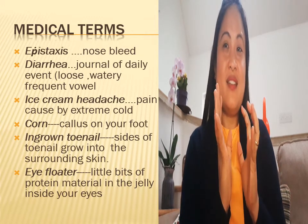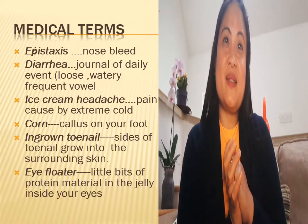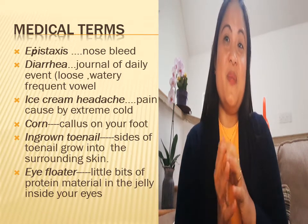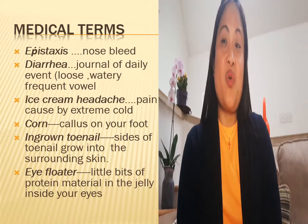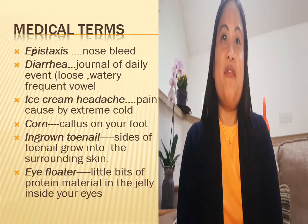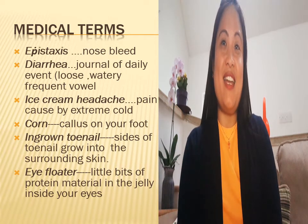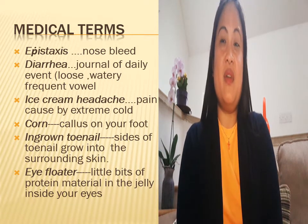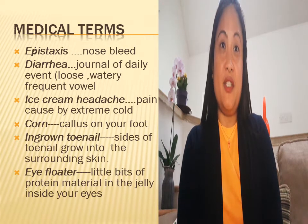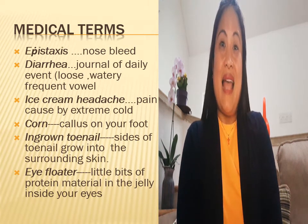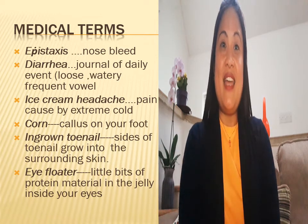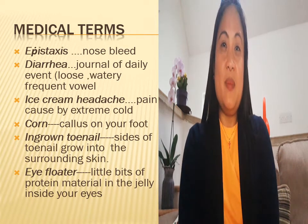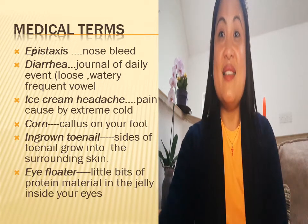Let's start from the most common and maybe quite familiar medical terms. Epistaxis means nosebleed or acute hemorrhage from the nostril. Diarrhea — it's loose, watery, frequent, foul. Ice cream headache is a pain caused by extreme cold food, like eating ice cream. Corn is a callous on your foot. Ingrown toenail happens when the sides of the toenail grow into the surrounding skin. And eye floater means little bits of protein material in the jelly inside your eyes.